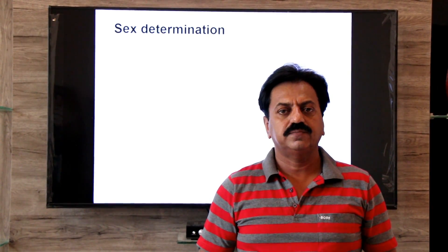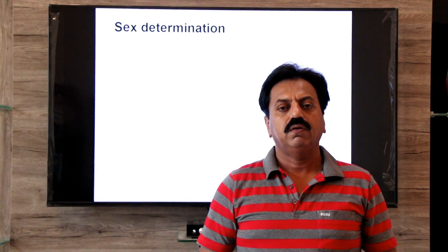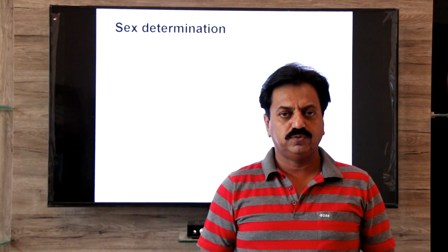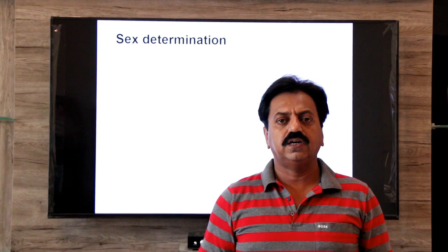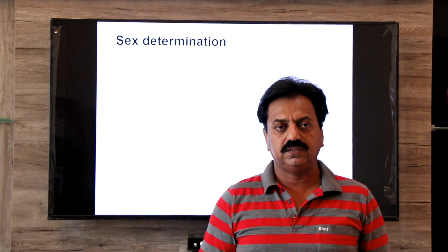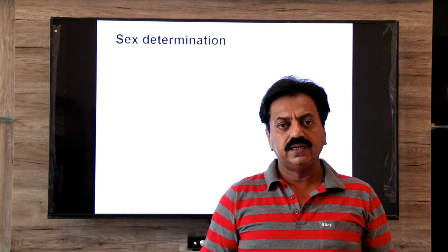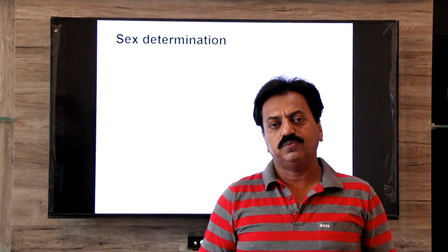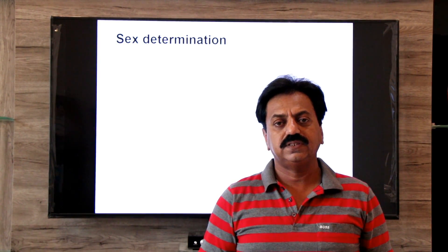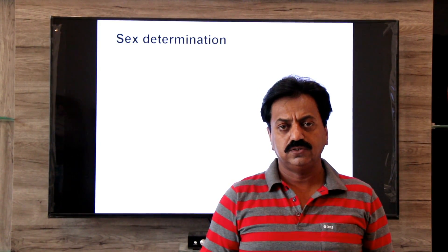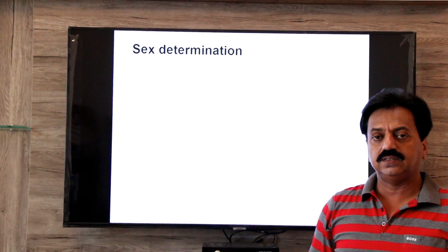Hello guys, welcome back. Yesterday we discussed autosomes and sex chromosomes. Autosomes are those chromosomes which are not involved in sex determination but determine the somatic body traits, and sex chromosomes are the chromosomes involved in determination of sex of an individual.